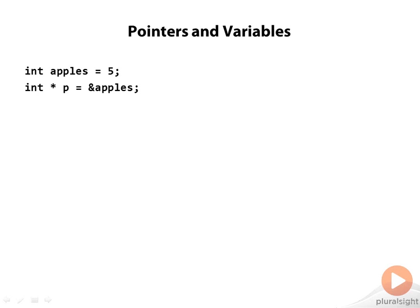Again, this star has nothing to do with the arithmetic operator. Now, pointer declarations can get complicated. This is really simple, but as you will see later, it doesn't always stay this simple, and I've found that it helps to read such declarations from right to left.